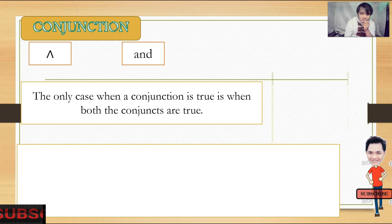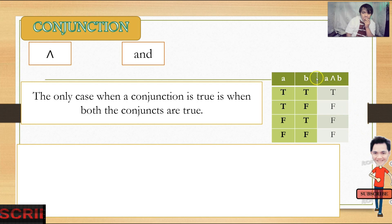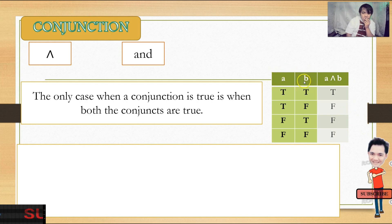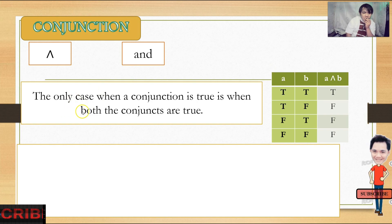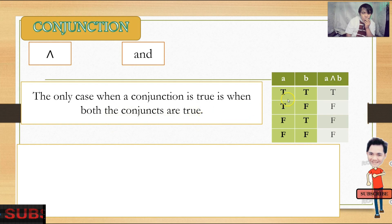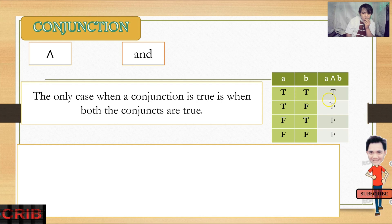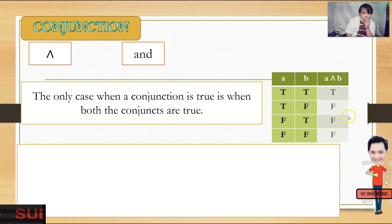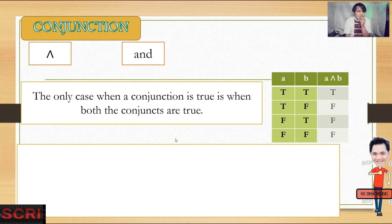Let's see the truth table. We have first statement A, second proposition B, and then we use the conjunction — A and B. According to the definition, the only case when a conjunction is true is when both conjuncts are true: true and true gives true. Any other combination will be false.